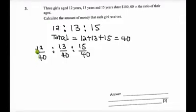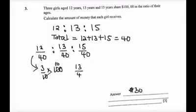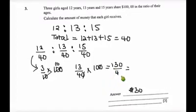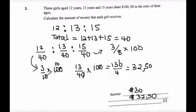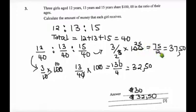Then we reduce what can be reduced to lowest terms. 12 over 40 is the same as 3 over 10. So we will multiply by the amount which is 100. 3 over 10 times 100 gives $30. Then 13 over 40 times 100 gives $32.50. Lastly, I will consider 15 over 40, which in lowest terms is 3 over 8 times 100. 75 divided by 2 gives me $37.50. So these are the amounts each is going to receive.